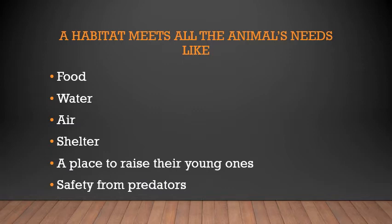A habitat must meet all the following needs of an animal: food should be available, water should be available, air should be present, and there must be shelter — meaning a place of safety, a place to raise their young ones, and safety from predators. All these things are necessary for a place to be called a habitat for an animal.